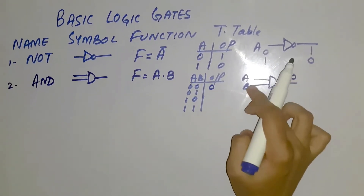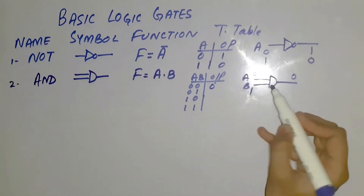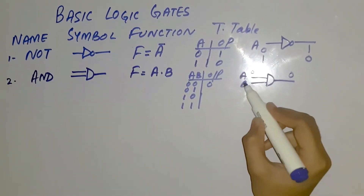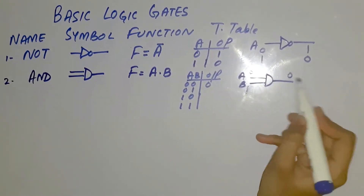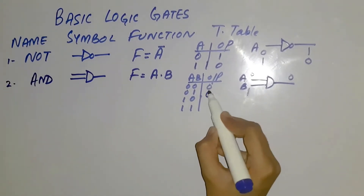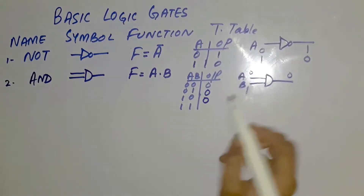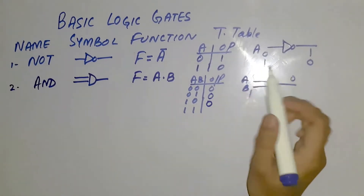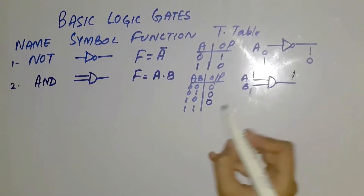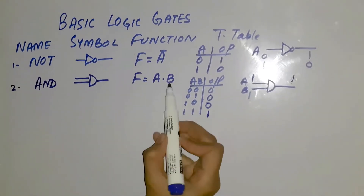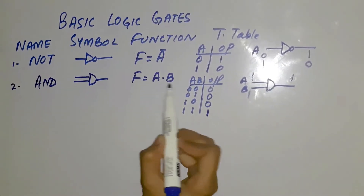If a has value 0 and b has value 1, then the output will be 0. With 1 and 0, the output will again be 0. Only if both have value 1 will the output become 1. That's why the AND gate is actually the multiplication of a and b.